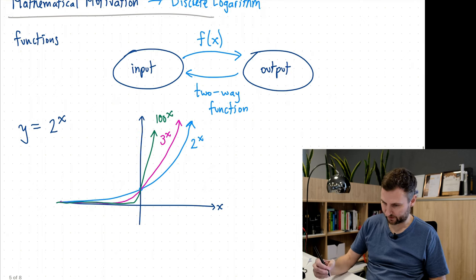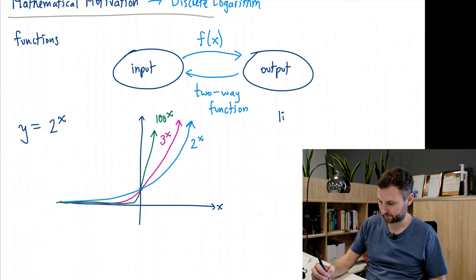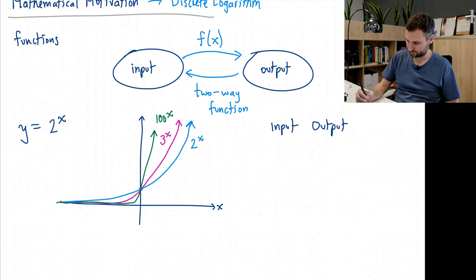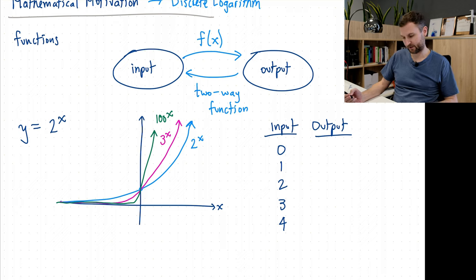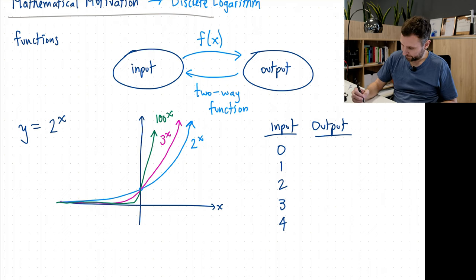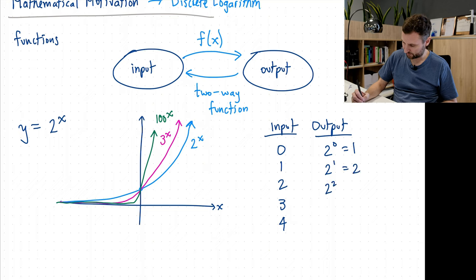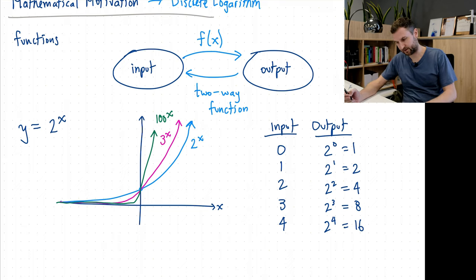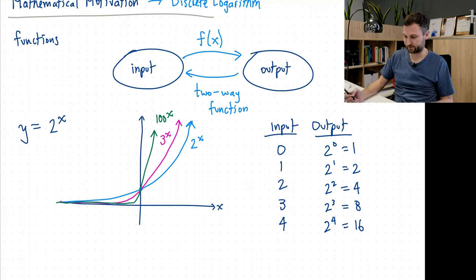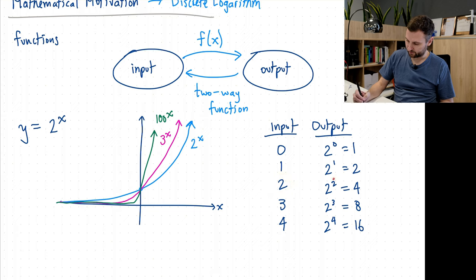If I hug the x-axis a little bit longer before turning, we might have 3 to the x. And as I increase this value, I'm going to get like a corner, so this might be 100 to the x. If I do some examples here, let's start with zero as an input, and then we'll increase by one. My output is 2 raised to that number. So 2 to the zero is 1, 2 to the one, 2 squared, 2 cubed, 2 to the 4 is 16.